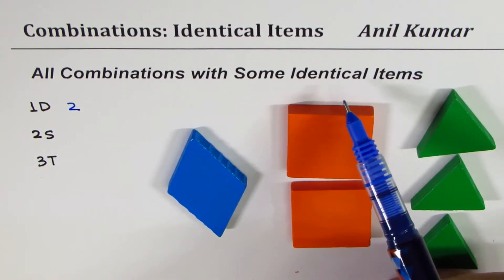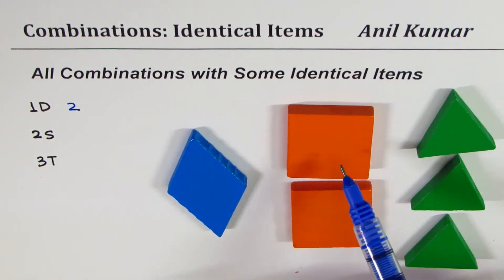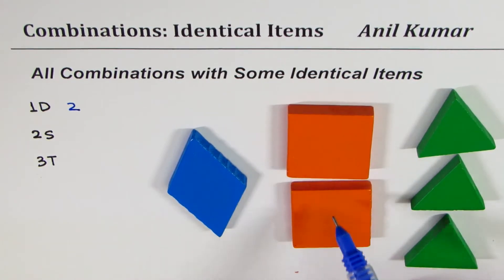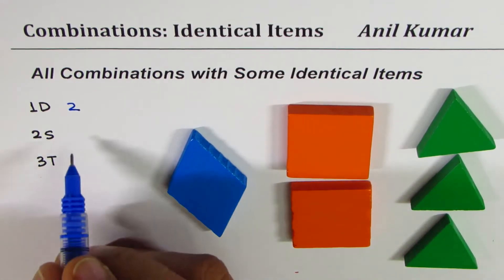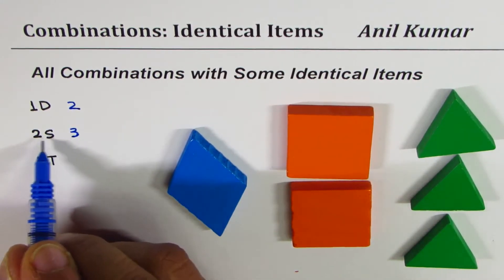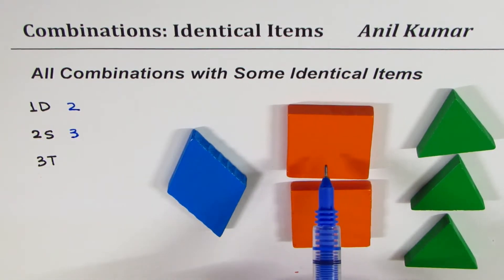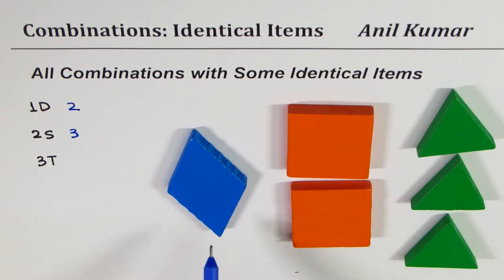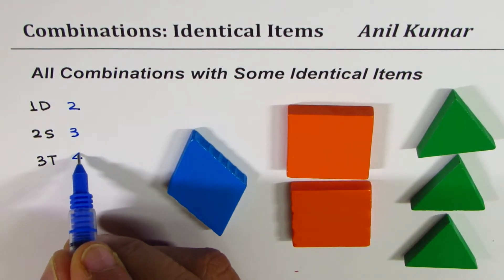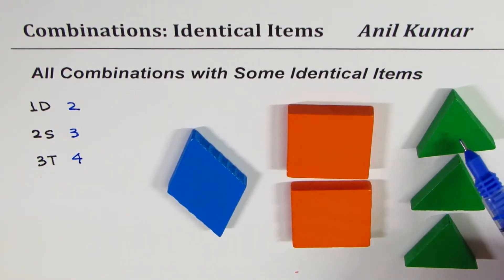For squares, I may not select it, I may select one of them, or I may select both of them, so when I have two squares I have three choices, one more than two, since I can either select one of them, both of them, or none of them. When I have three triangles I will have four choices because I may not select any one of them, I may select one, I may select two, or I may select three. So we have four choices, one more than the identical elements.